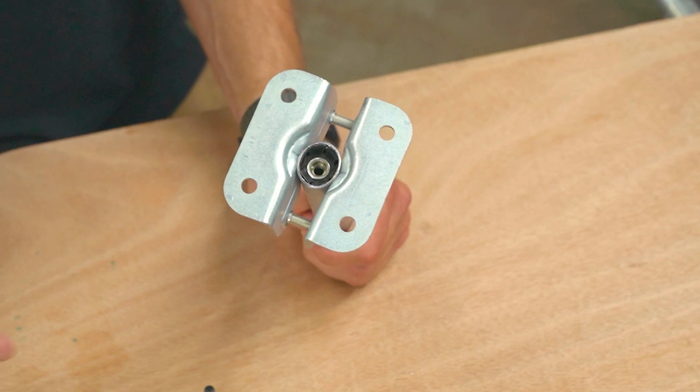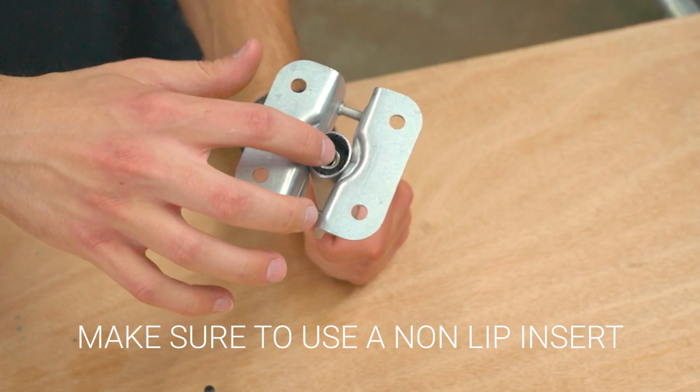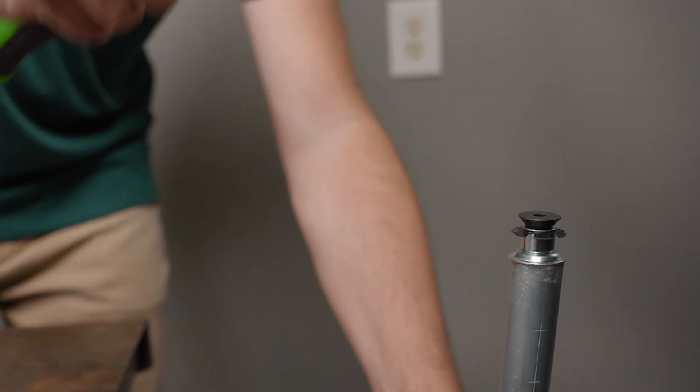Before I show you that, you'll notice that I have a quarter 20 no lip insert. I have one of those hammered into the end of the piece of conduit. I'll link a couple of videos about the inserts down below, as well as a couple of videos on how to make the process of installing them easier.